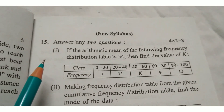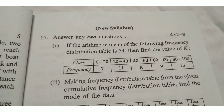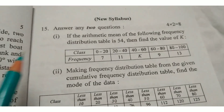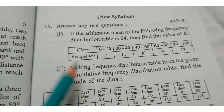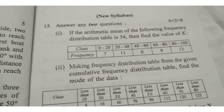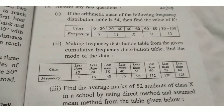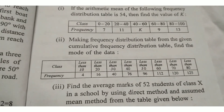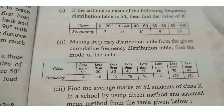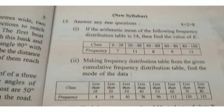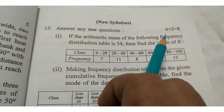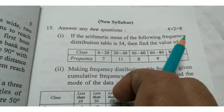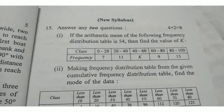Question number 15: Statistics. Answer any 2 questions — 3 questions come from your Statistics, Chapter 26. Answer any 2 questions, each containing 4 marks — 4 into 2 equals 8 marks.